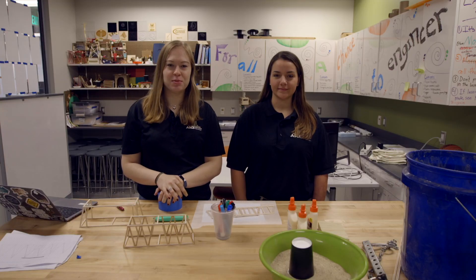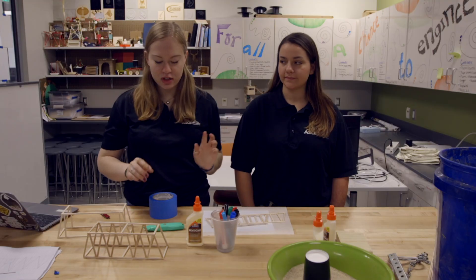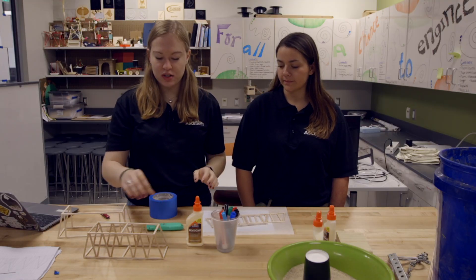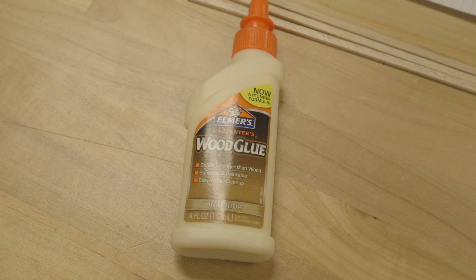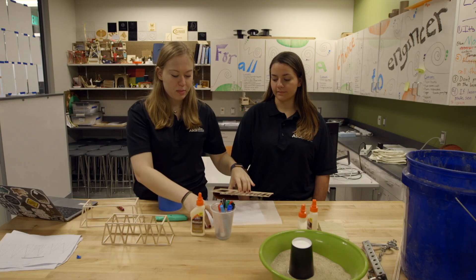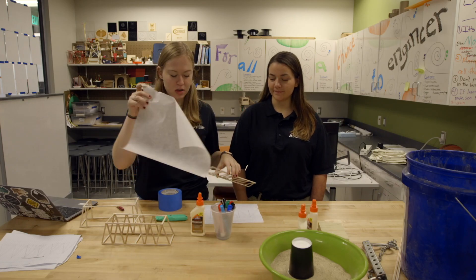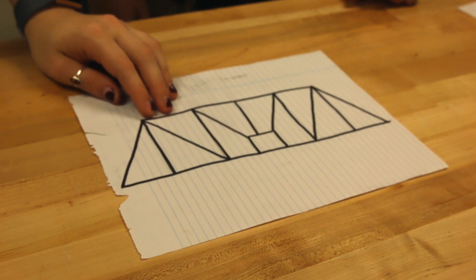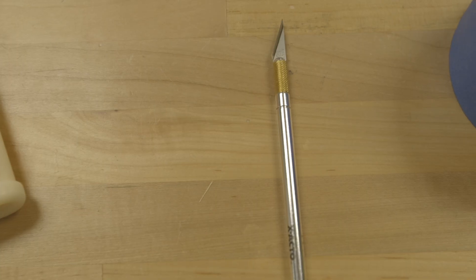So today we're going to tell you about some key tips and tricks for building bridges. Generally speaking, you're going to want your balsa wood, your glue, parchment paper or wax paper, and then also a template, and you're also going to want an exacto knife.